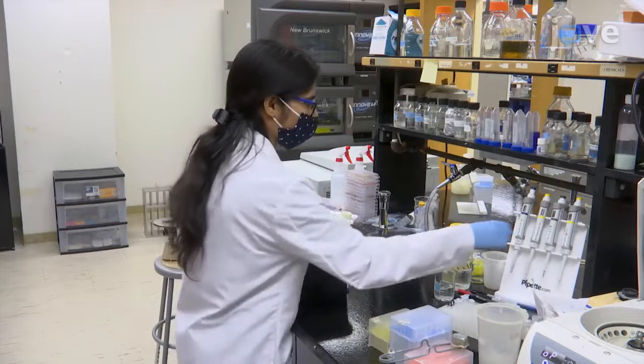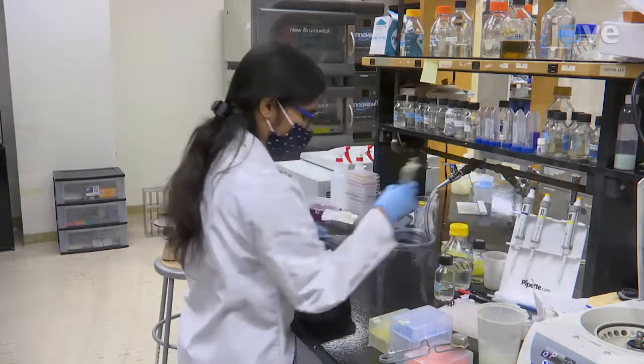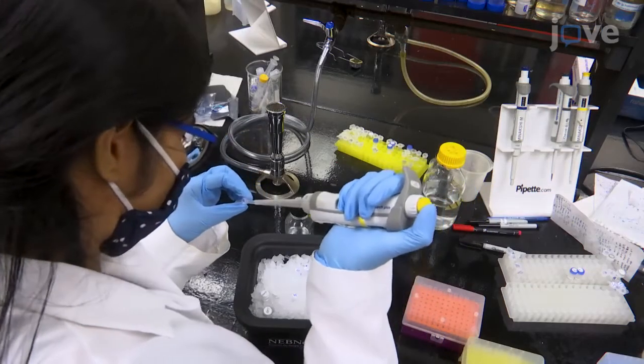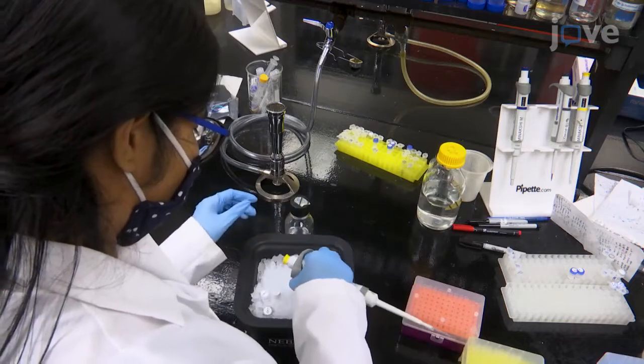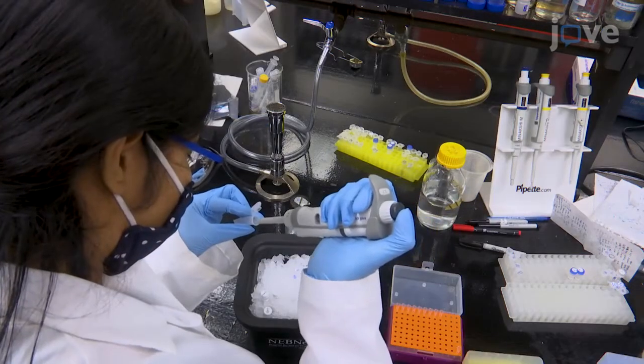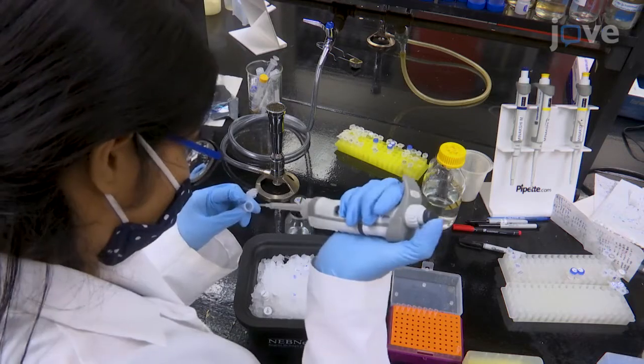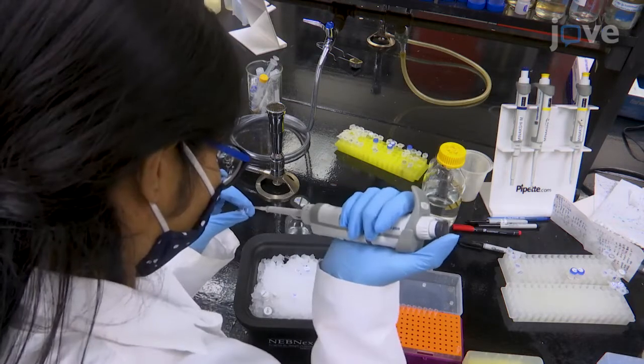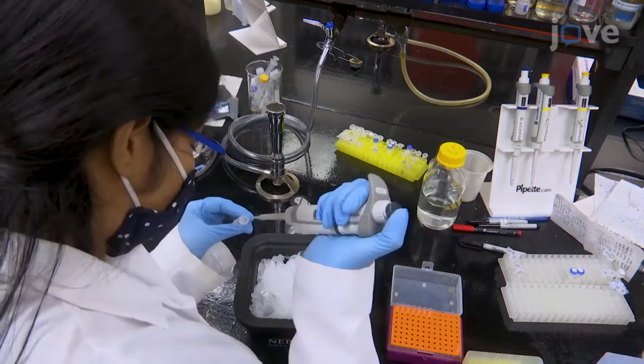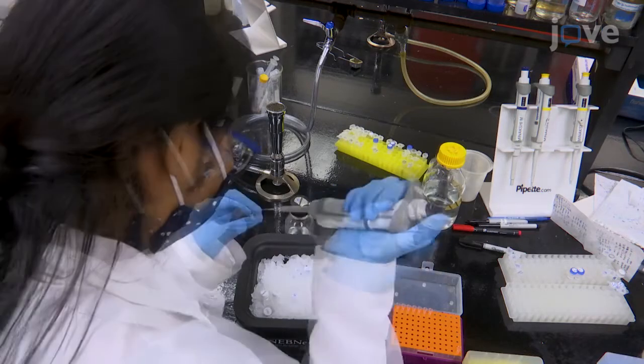Begin by setting up the Golden Gate reaction mix. Add 20 femtomoles of each PCR product and the entry vector, 1 microliter of 10X T4 ligase buffer, 0.5 microliters of ESP3I, and 0.5 microliters of T4 ligase.